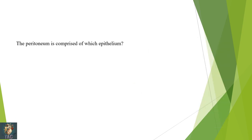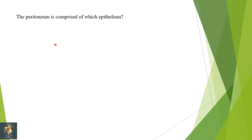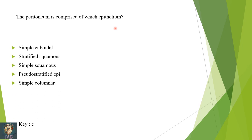Next: the peritoneum is composed of which epithelium? Simple squamous epithelium. Correct option is C.